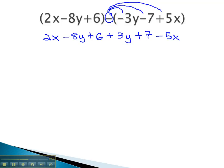Then we can finish by combining like terms. 2x is like the negative 5x, that gives us negative 3x. Negative 8y is like the 3y, giving us a total of negative 5y's.